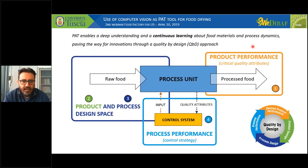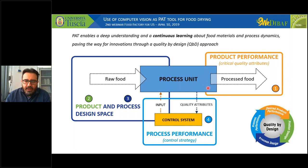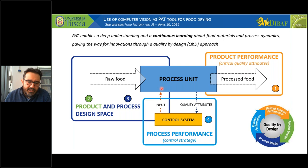PAT is really connected with the Quality by Design approach, which is a systematic approach using a reverse engineering way of studying a process. Reverse engineering means we first define what final product quality we want to obtain. Then we define the characteristics of the raw material and the impact of process attributes on final quality. When steps one through three are complete, we develop a control system — step four — which acquires information directly from the process unit and is able to change process parameters in real time.